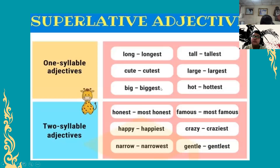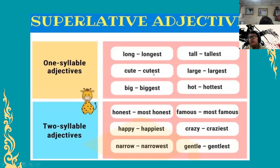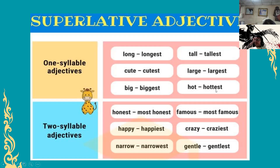We have here the superlative adjective. You are going to use EST. EST if your adjective is only one syllable. For example: long becomes longest, cute becomes cutest, big becomes biggest, tall becomes tallest, large becomes largest, hot becomes hottest. For 'hot' which ends in T, you have to double the consonant. It will become 'hottest', double T.